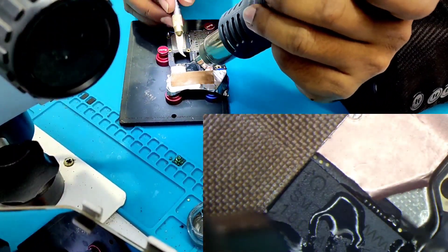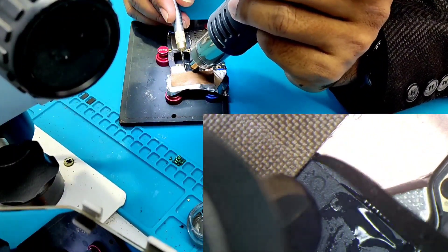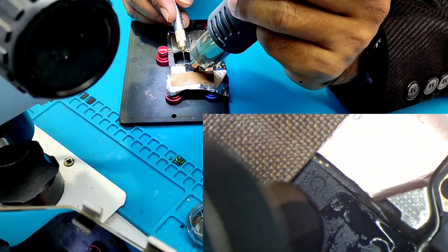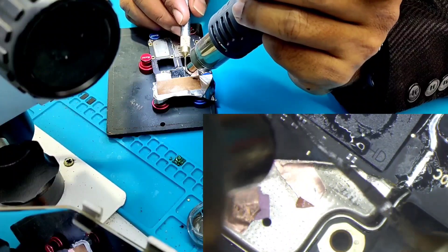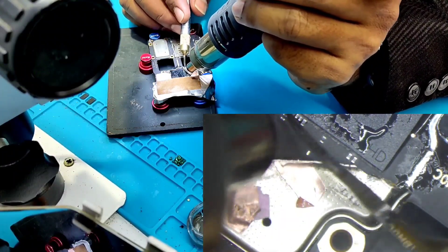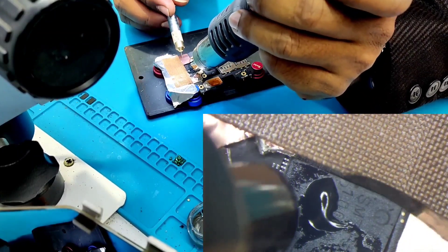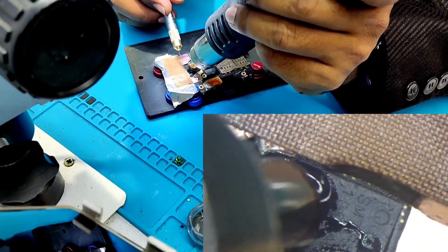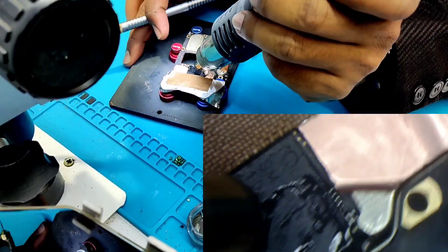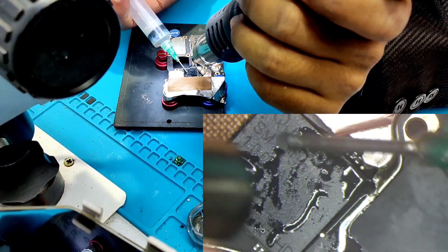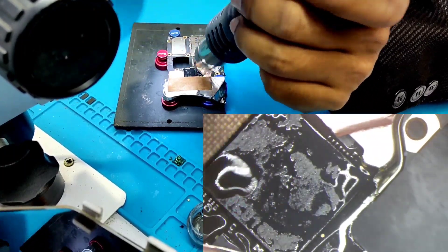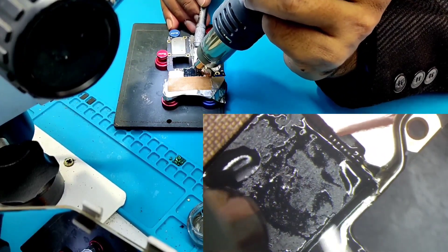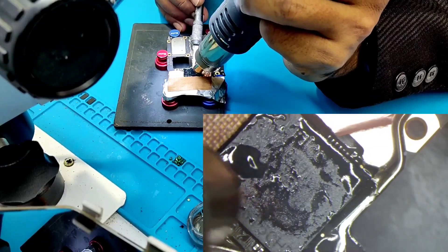The processor needs to be reballed and reinstalled fresh. This will 100% solve the camera and touch problems. But this chip-level work isn't available everywhere. Many service centers don't have this capability. Many people try without proper knowledge and end up damaging phones completely.